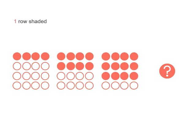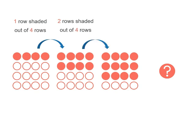there's 1 row out of 4 that's shaded. Then we've got 2 rows shaded out of our 4 rows. Then we've got 3 rows shaded out of 4 rows.